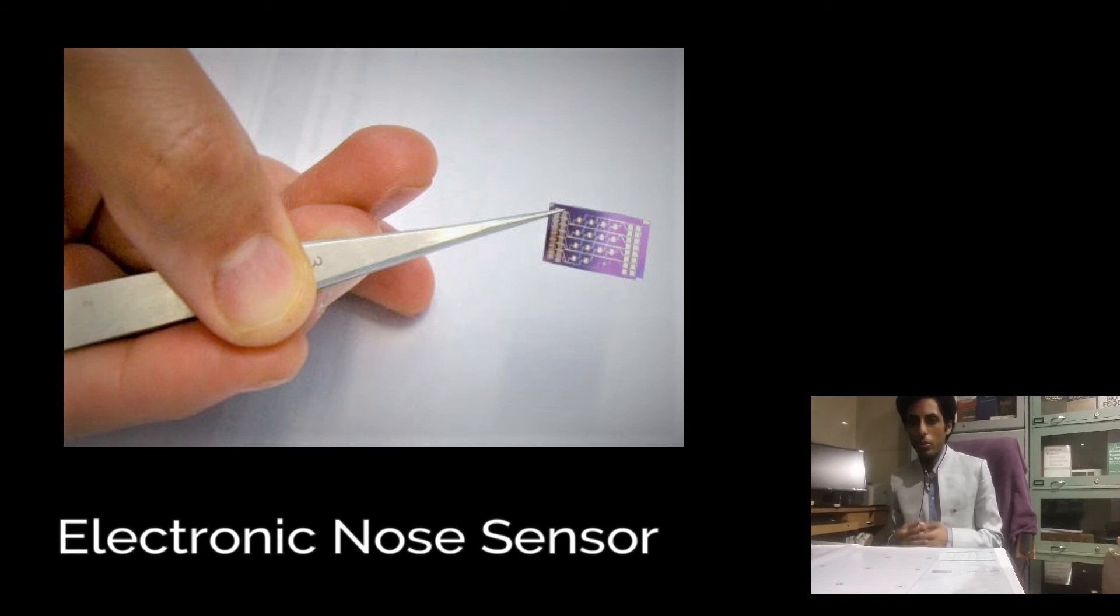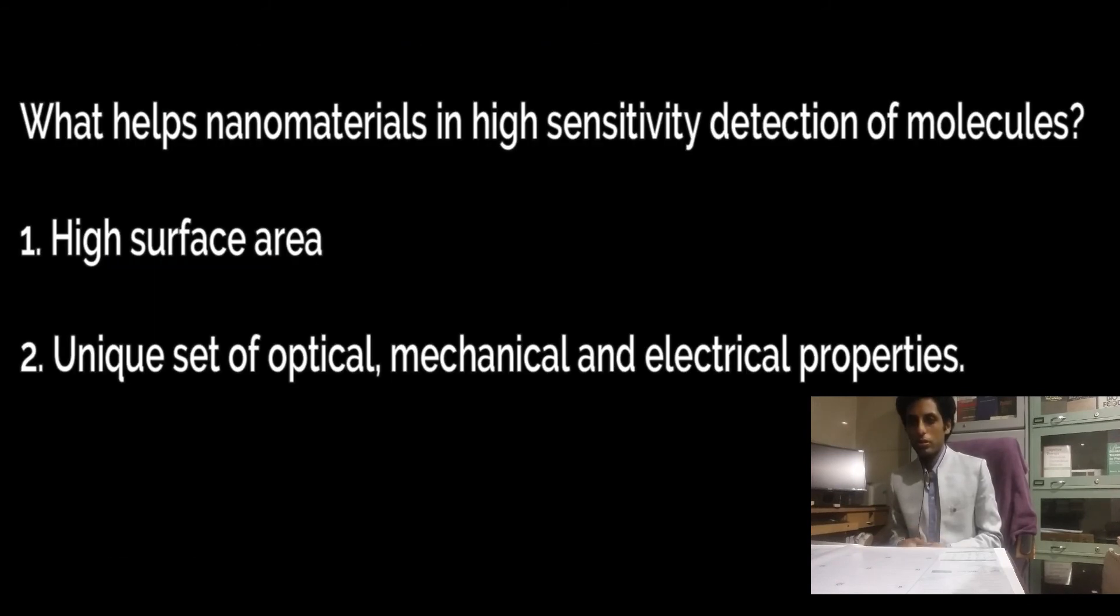So what's the question that arises: what helps nanomaterials in high sensitivity detection of molecules? Number one, that property is high surface area, and second one is a unique set of optical, mechanical, and electrical properties.